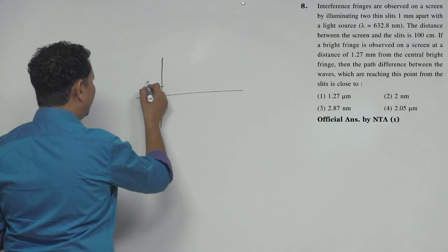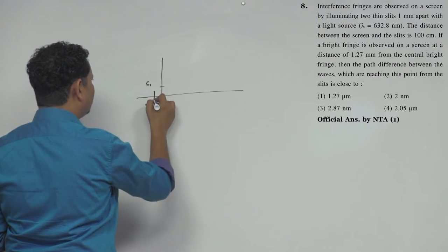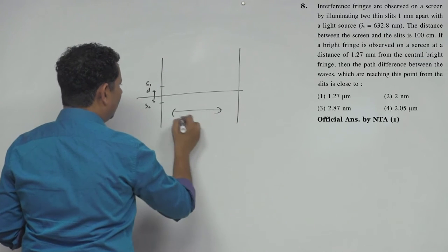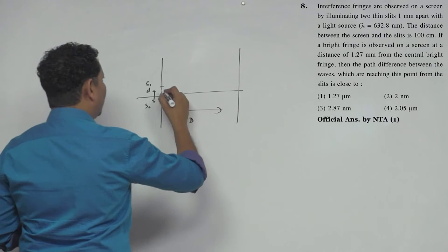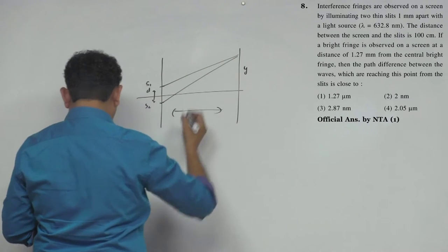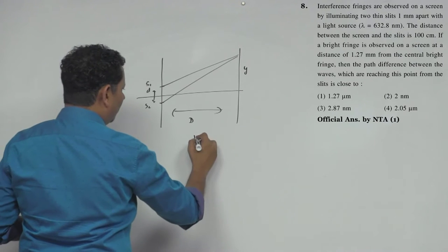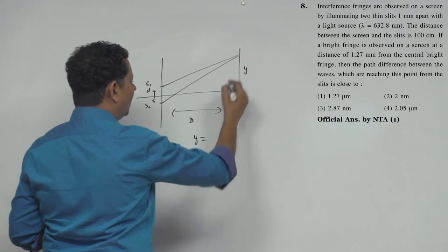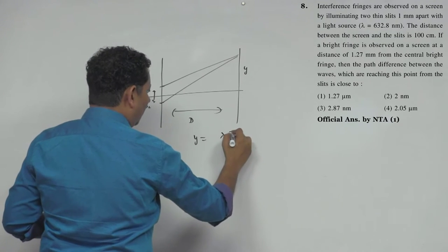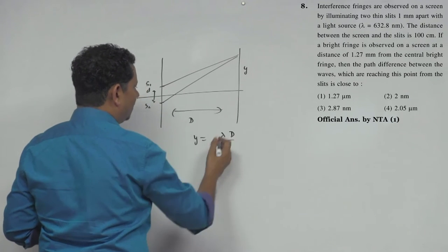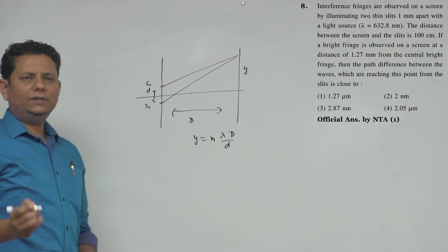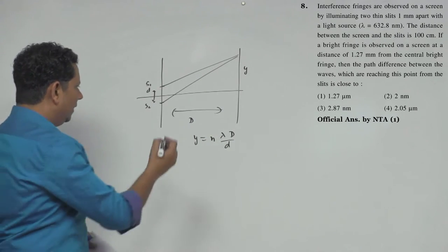Here you have two slits S1 and S2, the distance between them is small d, and the screen distance is capital D. You need to know that wherever maxima forms, the formula you should use - we write y will be equal to the fringe width, which we write as lambda D by d. This is the fringe width, and for the nth maxima we write n lambda D by d. So this is the location of maxima.